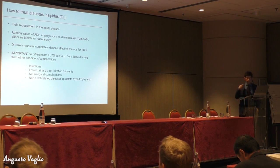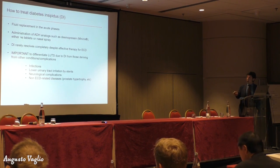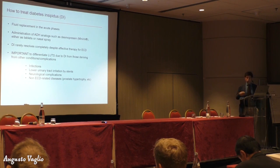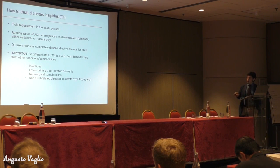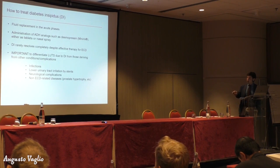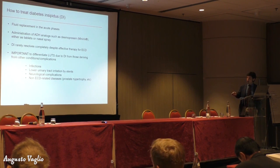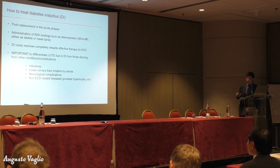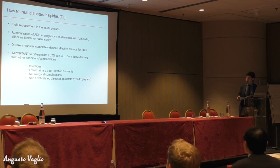We can replace all the fluids that the kidney loses in the early phases, but we need to treat this condition with ADH analogs such as desmopressin. The problem is that although treatment can be effective for many complications of ECD, most of the time diabetes insipidus remains. It is important to differentiate all the symptoms deriving from diabetes insipidus from those deriving from other complications, such as infections that can be treated, urinary tract irritation by stents, neurological complications that can affect bladder function, and also non-ECD-related diseases such as prostate and hypertension.